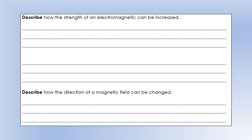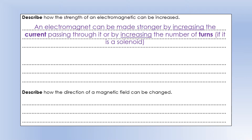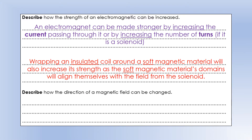How can we change the strength of an electromagnet? One easy way is by increasing the current passing through it - the higher the current, the faster the charges move, therefore you get a stronger magnetic field. If we're dealing with a solenoid-type electromagnet, having more turns or more coils will also increase magnetic field strength. We can also wrap the solenoid around a soft magnetic material, as soft magnetic materials will align themselves with the external field applied, giving an even stronger magnetic field overall. The wire must be insulated, otherwise current will just flow through the iron core instead.